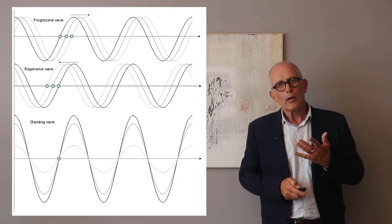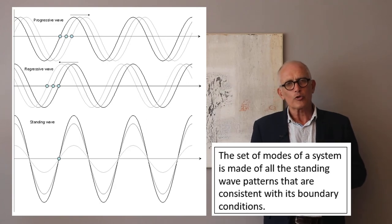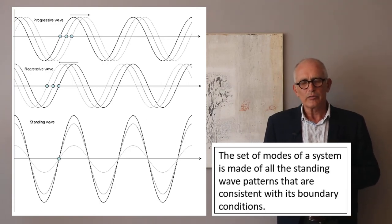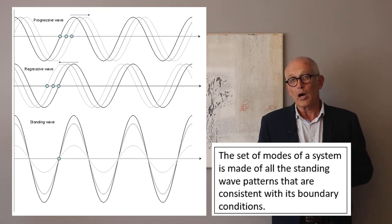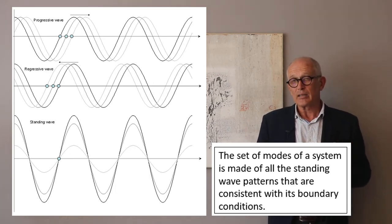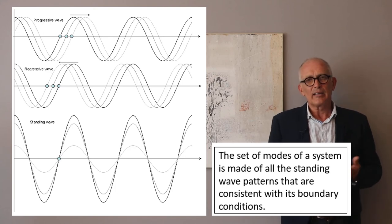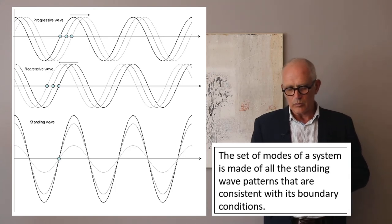Modes in a continuous structure are standing waves. Another way to define modes is to say that modes are all the standing waves that may exist in the structure and that are consistent with the boundary conditions.